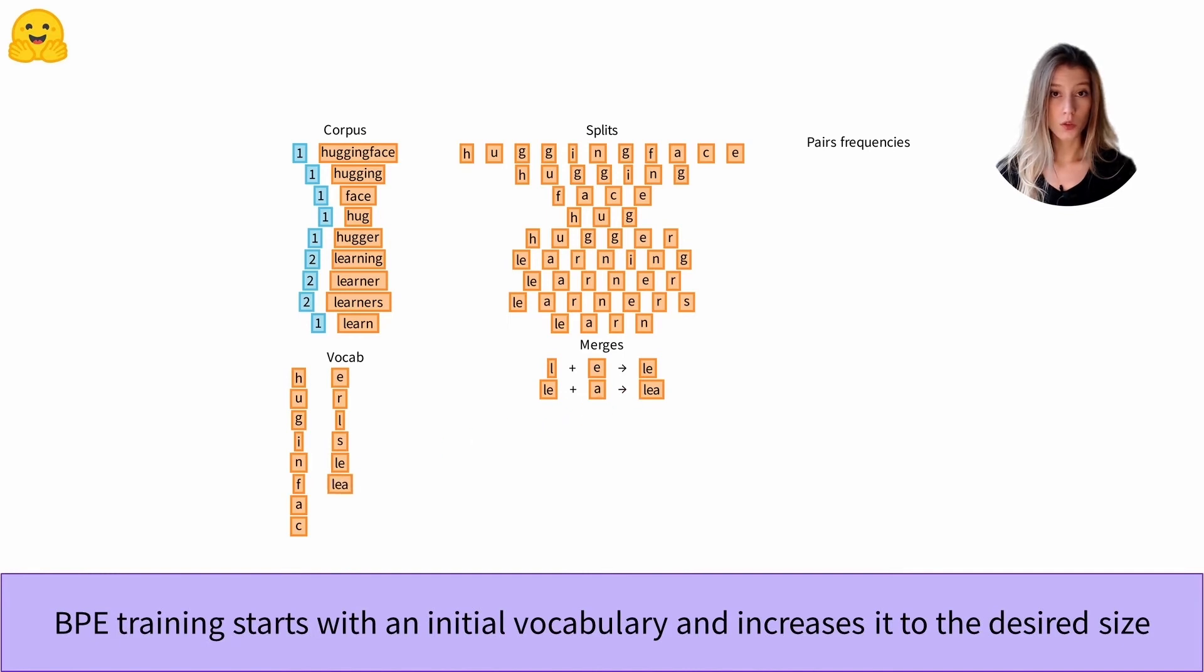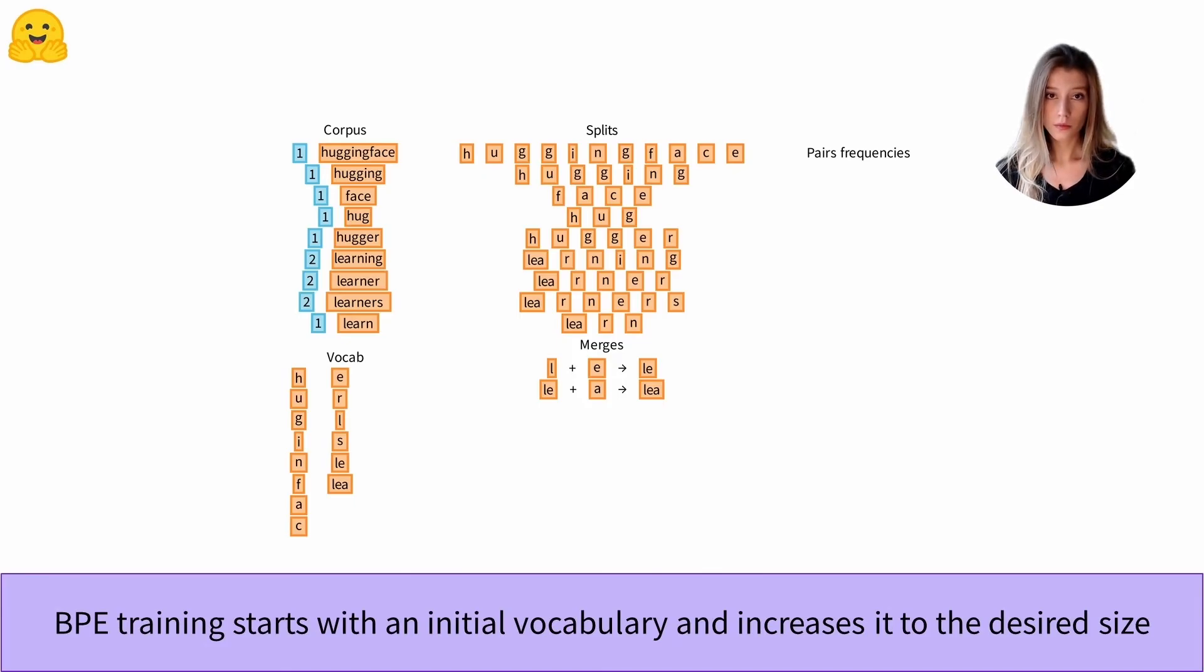We note it in our merge rules, we add the new token to the vocabulary, and then we merge all the pairs of tokens composed of the tokens l and i and a into our splits. And we can repeat this operation until we reach the desired vocabulary size.